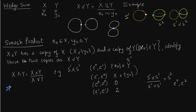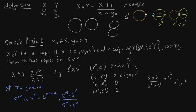Now a very important remark to remember for later: in general, S^m smashed with S^n is nothing but the sphere S^(m+n). This is clear from the example — S^m times S^n, wedged with S^m and S^n, leaves only one 0-cell and one (m+n)-cell. The other cells get identified in the quotient.